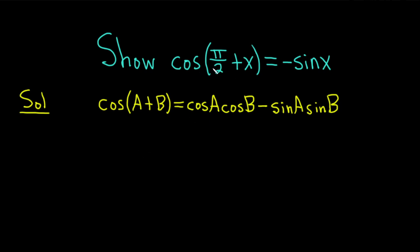Now we can write down our left-hand side of our equation. We have the cosine of pi over 2 plus x. And so we can see here that pi over 2 is going to be A and x is going to be B.